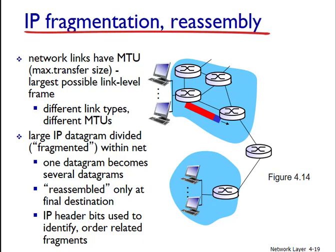When a destination host receives a series of datagrams from the same source, it needs to determine whether any of these datagrams are fragments of some original larger datagram. If some datagrams are fragments, it must further determine when it has received the last fragment and how the fragments should be pieced back together to form the original datagram. To allow the destination host to perform these reassembly tasks, the designers of IPv4 put an identification field, a flag, and a fragment offset field in the IP datagram.